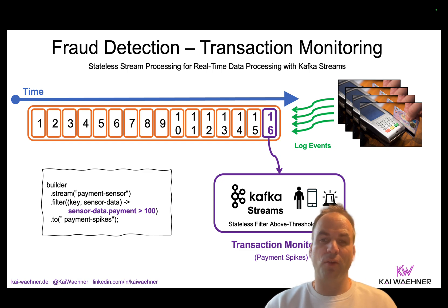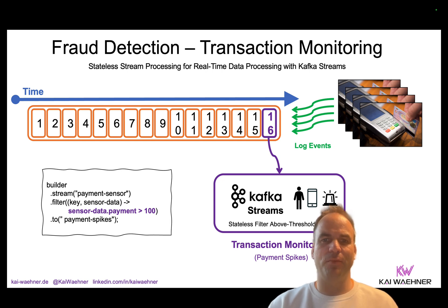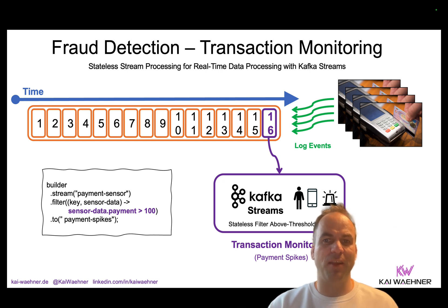The use case I show here is transaction monitoring — monitoring payment spikes. On the left side is example code using Kafka Streams in Java. We say: if the incoming payment is over 100 euro, then we do some action — for example, send it to a more advanced risk model. If it's below 100, we just process it or send it to a cheaper risk model. It is a very simple ETL scenario, but very powerful because we directly apply this logic after the event is created, in motion, before storing the data in a database or data lake. This can be done for transactional and analytical use cases in real time, even for millions of events — hundreds of thousands of transactions per second. But importantly, this is stateless: we take a look at one event at a time.